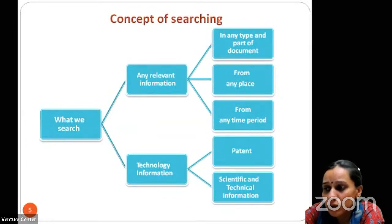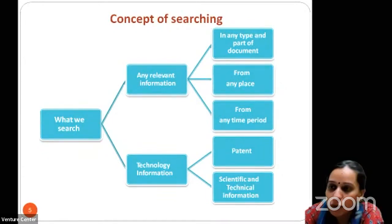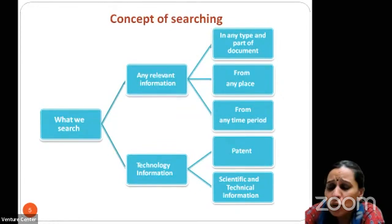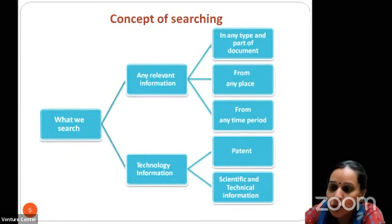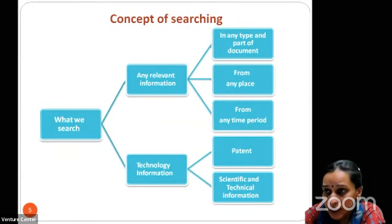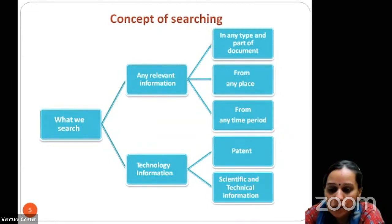When we look for any kind of information, we search on Google — it can be any document from any place or period. But when looking for technical information, there are mainly two sources: patent documents, which contain scientific information, and scientific and technical information such as research papers available online. In today's session, we will focus on finding technical information only through patent documents.